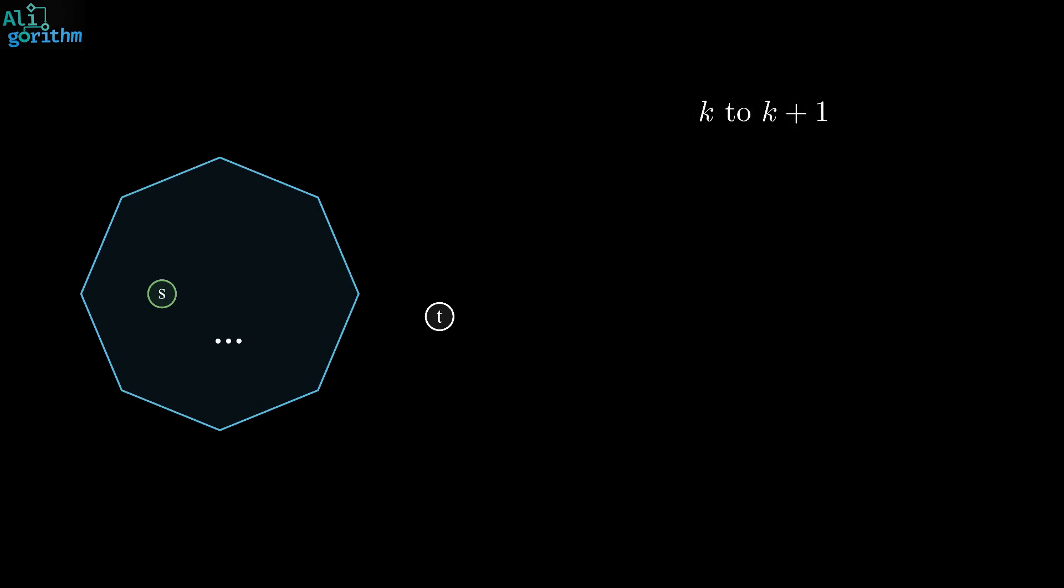Now let's prove the correctness of Dijkstra's algorithm by induction on the number of vertices. For the base case, the algorithm works correctly for the initial step, as it handles the case of the source node correctly. Now suppose the algorithm works correctly for the first K steps, we will prove it for the K plus 1th step. Let V be the K plus 1th vertex about to be extracted from the heap. And let P be the SV path given by Dijkstra's algorithm. Also let U be the vertex just before V in P. We'll prove this by contradiction. So suppose P is not a shortest SV path.